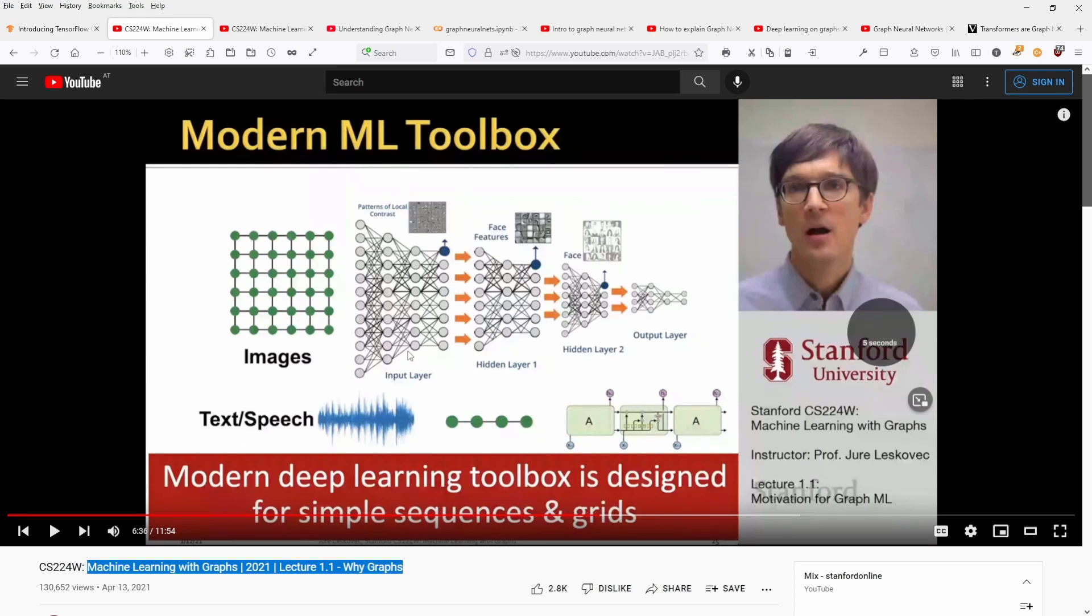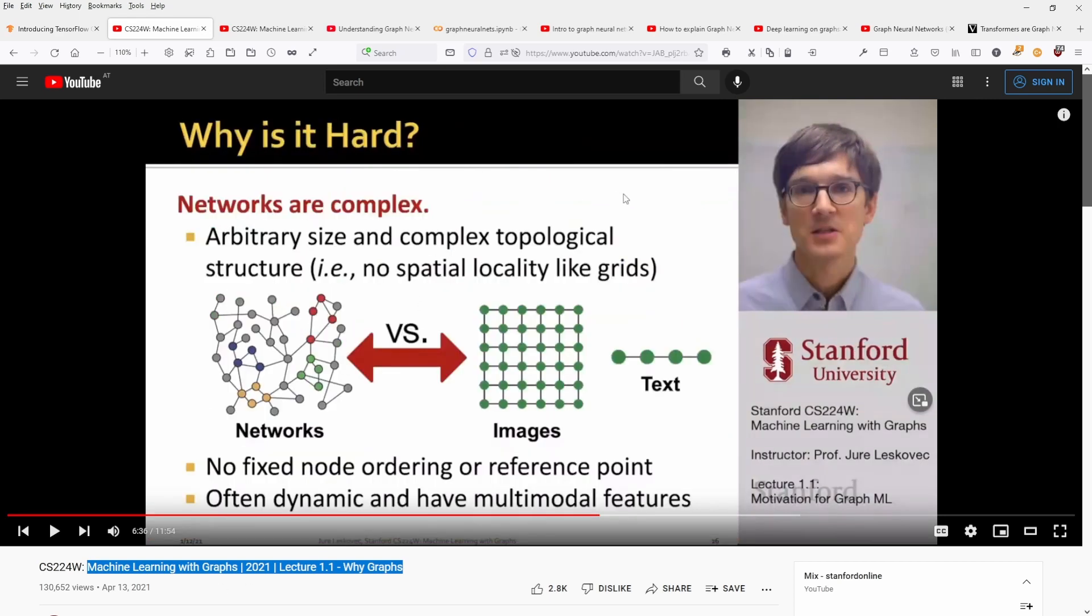Now, a graph is a little bit different. A graph has some arbitrary size and some complex topological structure. And this is the fascinating scene in graph neural networks. You have no fixed node ordering. You have no reference points. Of course, you are operating a non-Euclidean manifold and so on.